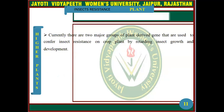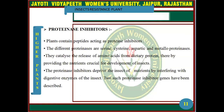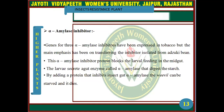Currently there are two major groups of plant-derived genes used to confer insect resistance on crop plants, both acting by inhibiting insect growth and development. The first group is proteinase inhibitors — proteins containing peptides acting as protease inhibitors. The different proteinases are serine, cysteine, aspartic, and metalloproteinases. They catalyze the release of amino acids from dietary proteins. The second group is alpha-amylase inhibitors; genes for alpha-amylase inhibitors have been expressed in tobacco.